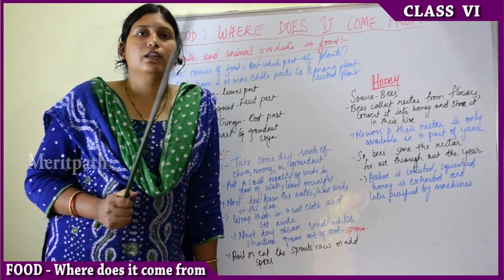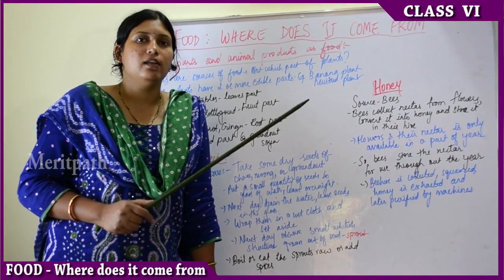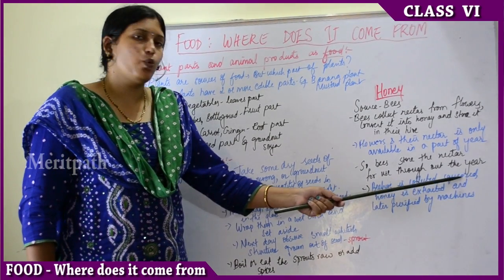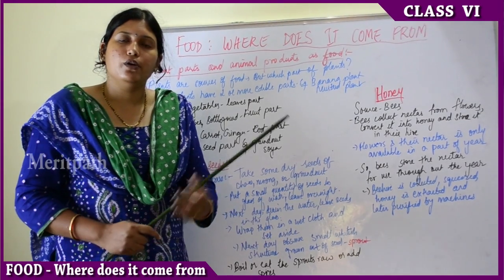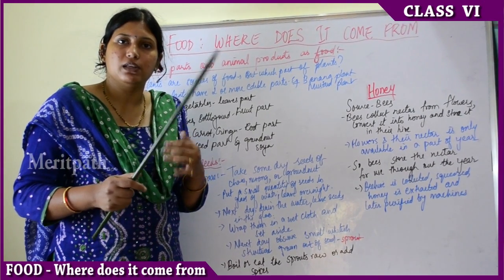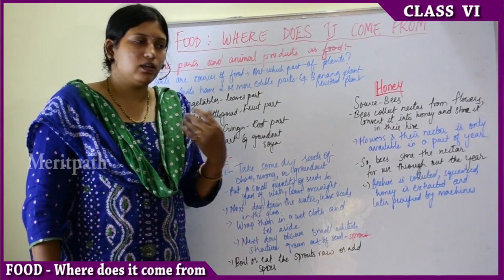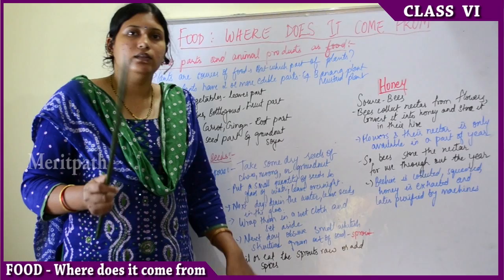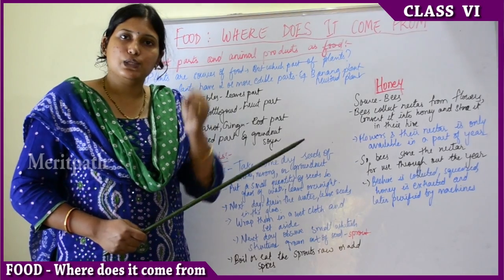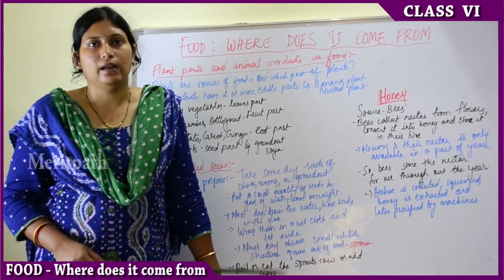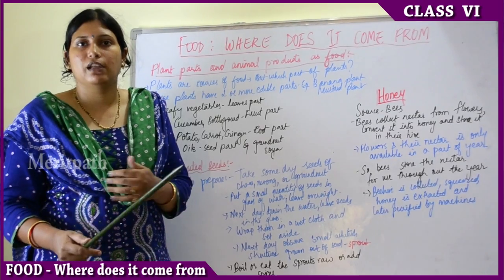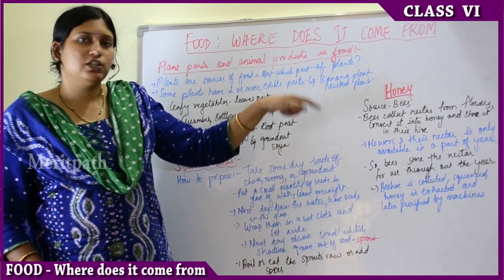Like in the Jungle Book movie, bears hunted for honeybeehives and stored honey for year-long use. To extract honey, professionals climb trees with a protective layer on their body so bees don't bite them, then pull out the hive, squeeze it, and extract the honey. Some village people bring honey directly, but otherwise honey is purified with machines and made available in supermarkets. This is how honey is an animal product which acts as food.